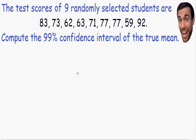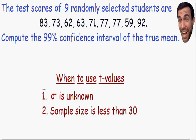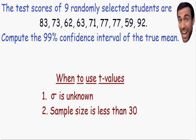I'm going to write these down to help you remember. The first condition for using a t value is the population standard deviation sigma is unknown. Notice how in this example the population standard deviation is never given to us — only the scores of nine students. We can get a sample standard deviation, but the population standard deviation is unknown, so this first condition has been met. The second condition is that the sample size is less than 30, which has also been met because we have a sample size of nine.